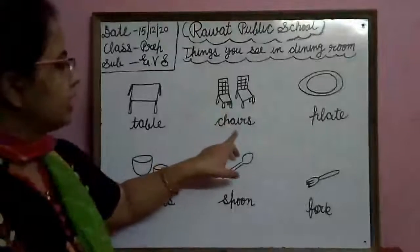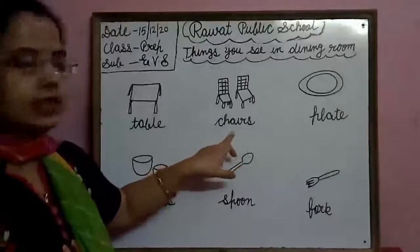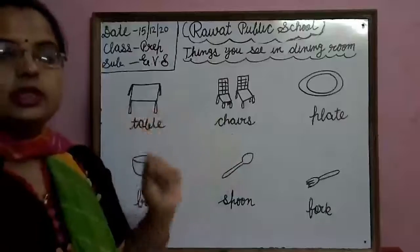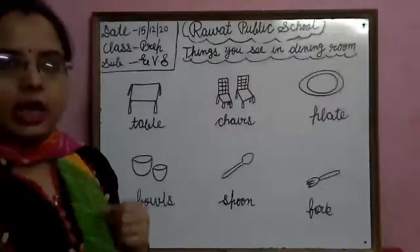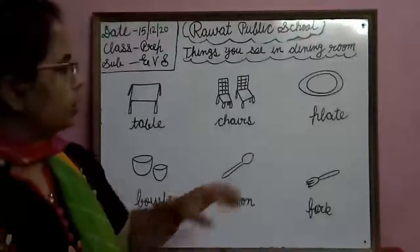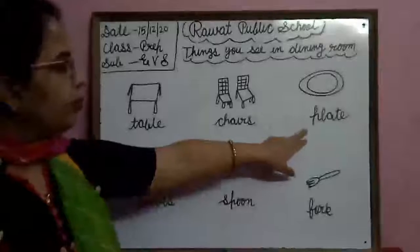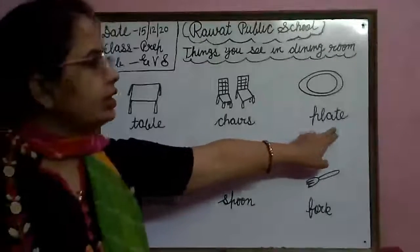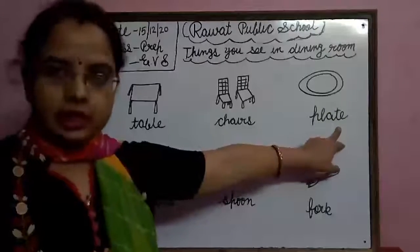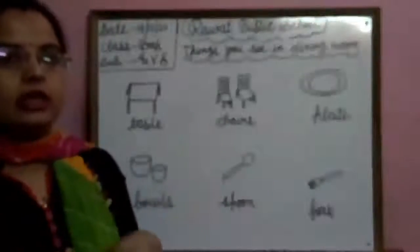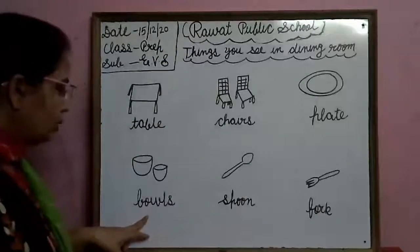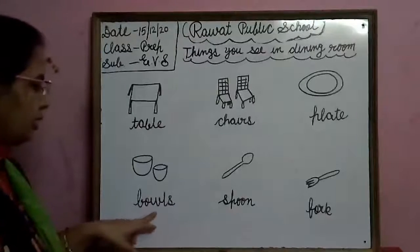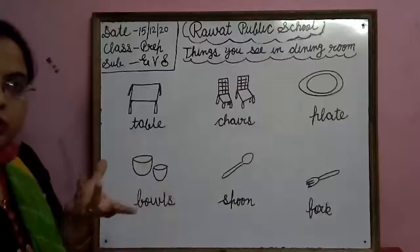Chairs — C-H-A-I-R-S, Chairs. Chairs पर हम बैठते हैं और फिर अपना खाना finish करते हैं। Plate — P-L-A-T-E, Plate. Plate होती है जिसमें हम खाना खाते हैं। Bowls — B-O-W-L-S, Bowls.